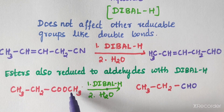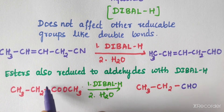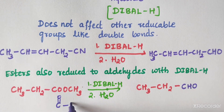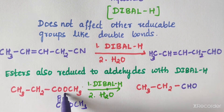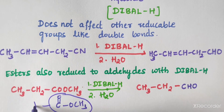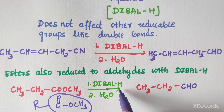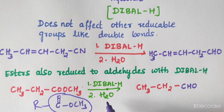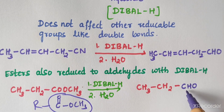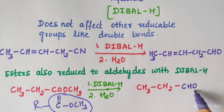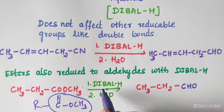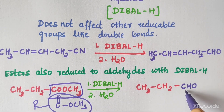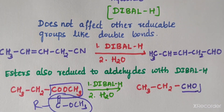Esters also reduce to aldehydes with DIBAL-H. For example, CH3CH2COOCH3 (an ester with C=O bonded to OCH3) treated with DIBAL-H followed by hydrolysis gives the corresponding aldehyde. DIBAL-H selectively reduces the ester group to an aldehyde.